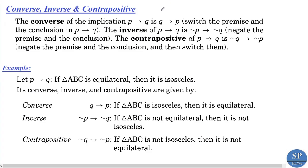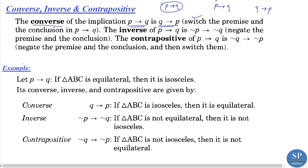Corresponding to an implication p implies q, we can define three other implications: converse, inverse, and contrapositive. The converse of p implies q is q implies p — that is, just switch the hypothesis and conclusion. The inverse of p implies q is: negation of p implies negation of q — negate both the premise and conclusion.